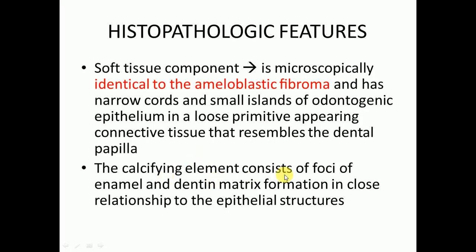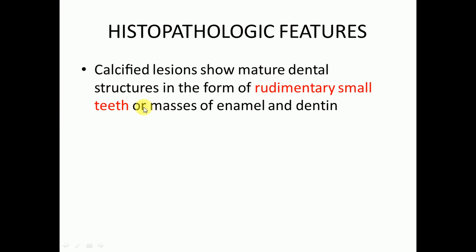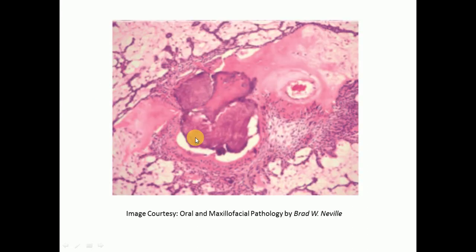The calcifying element consists of foci of enamel and dentine matrix formation in close relationship to the epithelial structures. Calcified lesions show mature dental structures in the form of rudimentary small terminations of enamel and dentine — a mass of calcified tissue that looks like dentine and enamel.